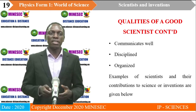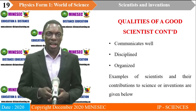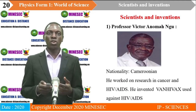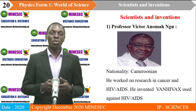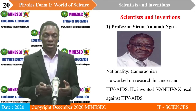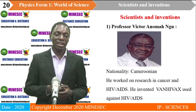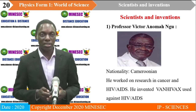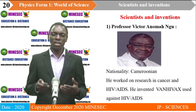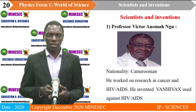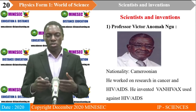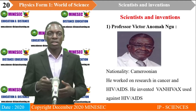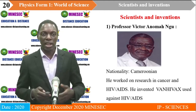Examples of scientists and their contributions: Professor Victor Anomangu was a Cameroonian researcher who worked on research in cancer and HIV-AIDS. He invented Vanivax, which is used against HIV-AIDS — a disease that has killed so many. He reduced the rate of death, though unfortunately he died before he finished his research, as he was still in the process of improving on that vaccine.